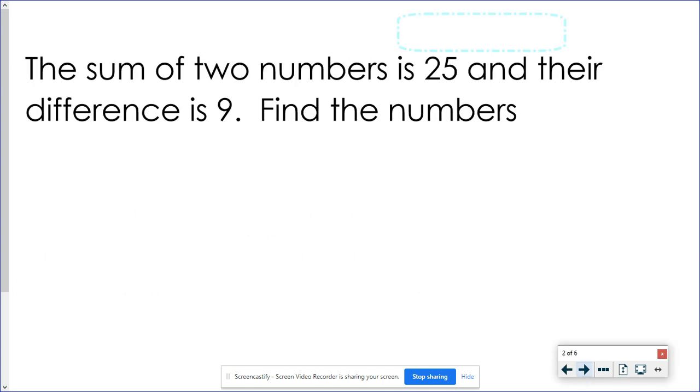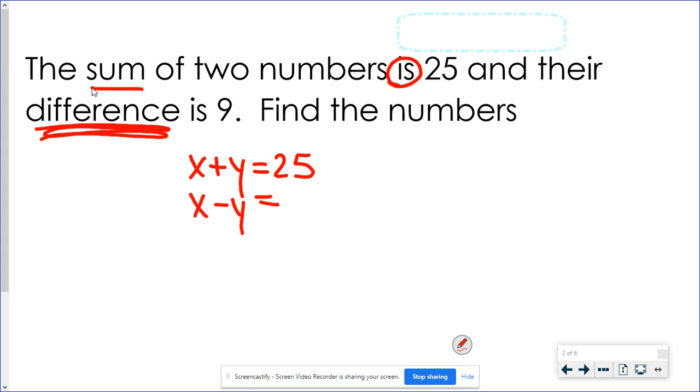So let's take a look at this. If I tell you that the sum of two numbers is 25 and their difference is 9 and I want to find the numbers. Typically we use X and Y if there's nothing specific. These are just two random numbers. When I'm looking at these, if I say the sum of two numbers that means I'm adding. So that would be X plus Y is 25. Is means equals and difference is the word that we use for subtraction. So X minus Y equals 9.